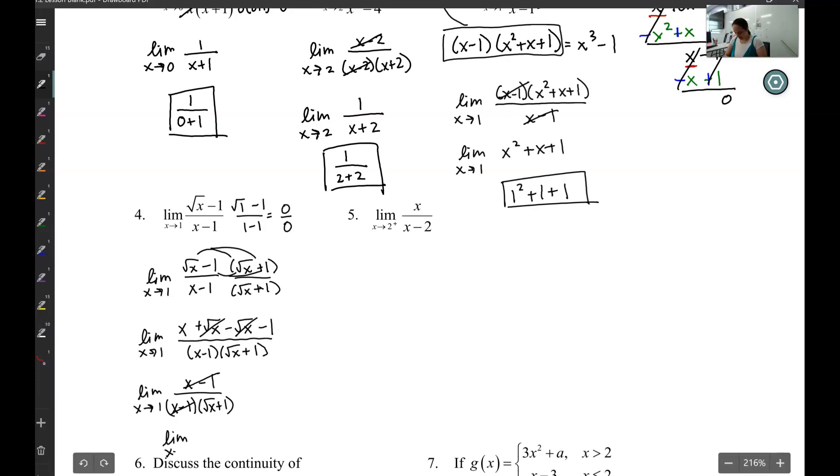So I am going to get the limit as x goes to 1 of 1 over square root of x plus 1, which I can now do my direct substitution. And there we go.